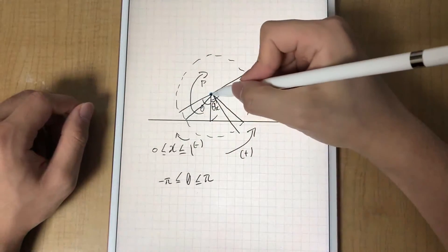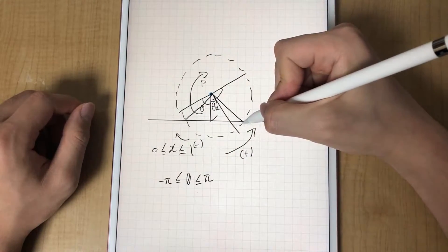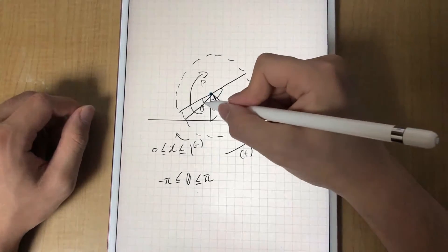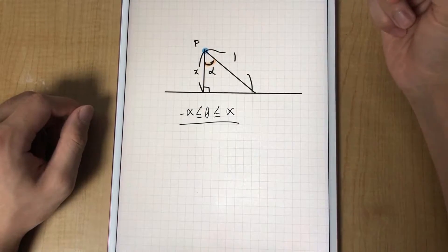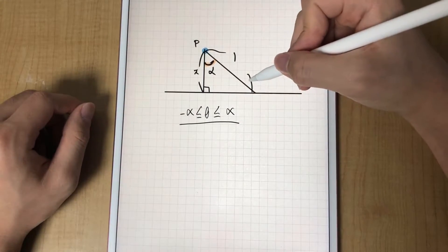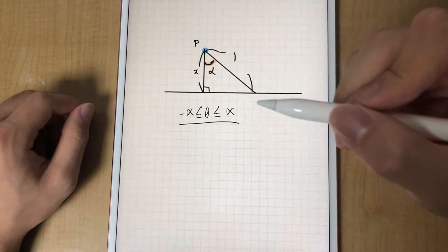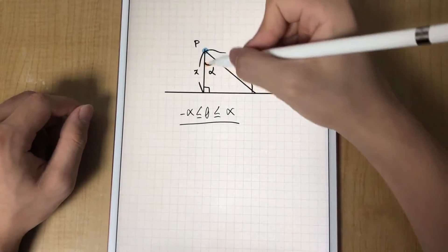So when the needle ends exactly at the line, these two angles, I'll call them alpha. Logically, for this needle to cross this line, zeta has to be between minus alpha and alpha.